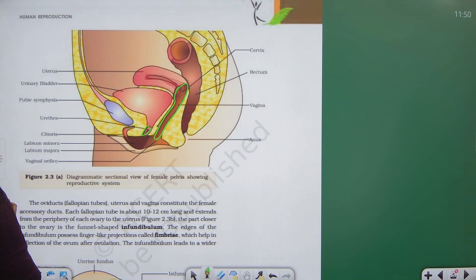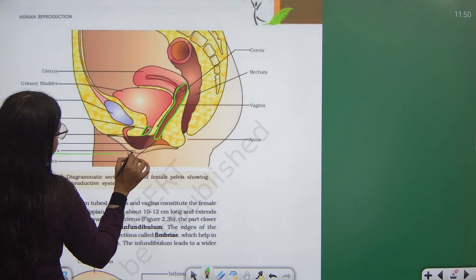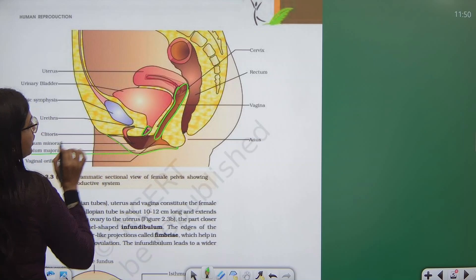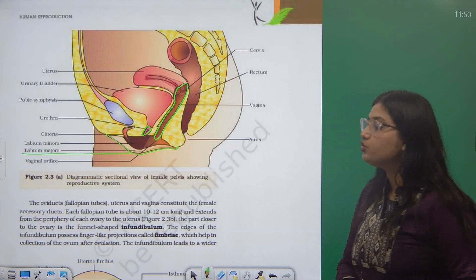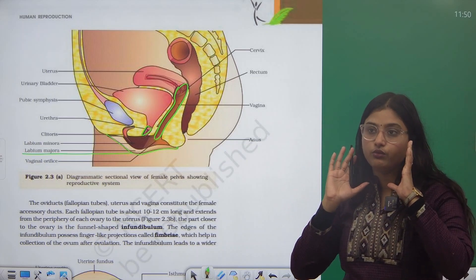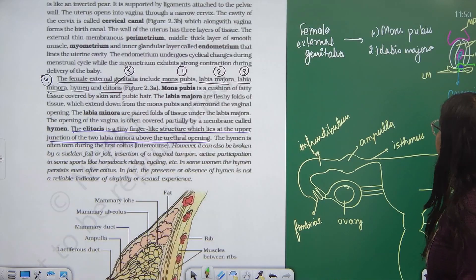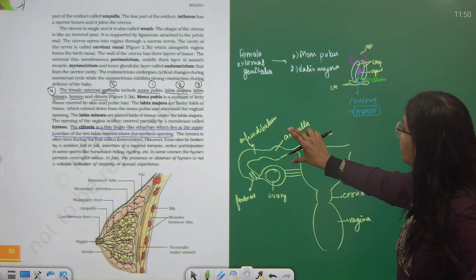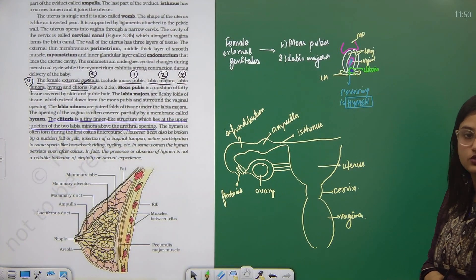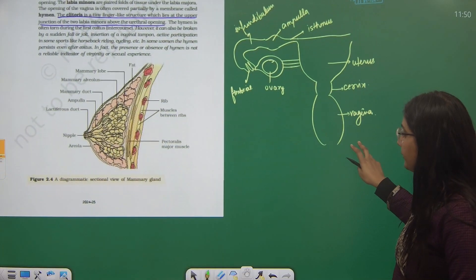The big fold, that is labia majora. This is taken in a transection, it's a dissectional view, that is why you cannot see it. But when you visualize it from the outside, mostly it is seen as a structure like this. This is the major thing here.